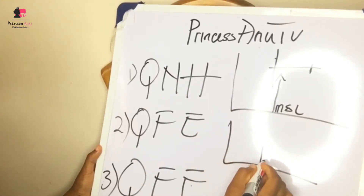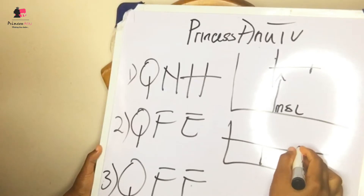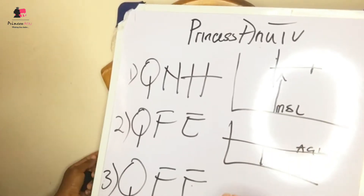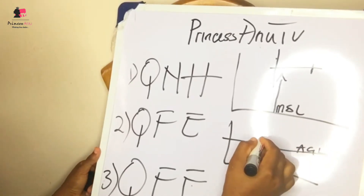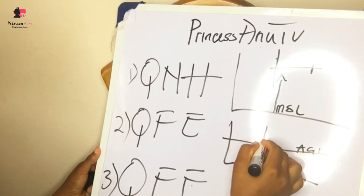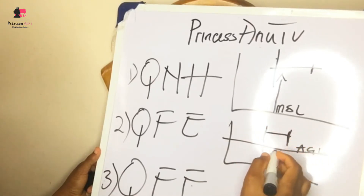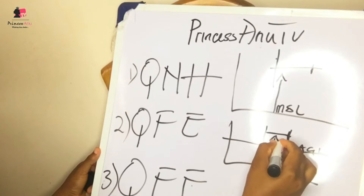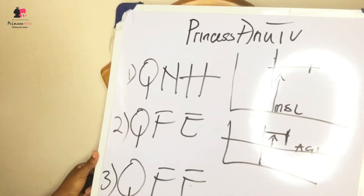QFE is the atmospheric pressure from aerodrome elevation — that is, from aerodrome level. When you're on the ground, your QFE is supposed to be reading zero feet. So if you set the QFE on the ground, your altimeter will read zero feet.